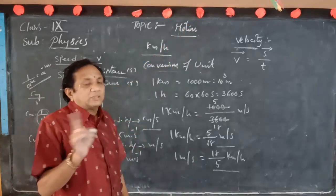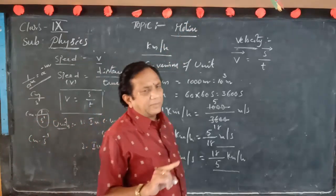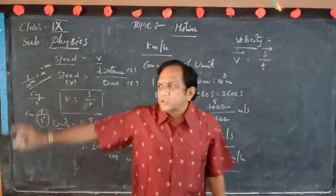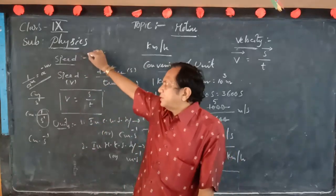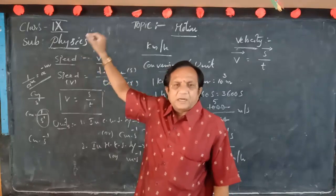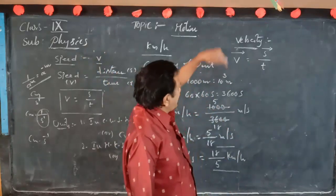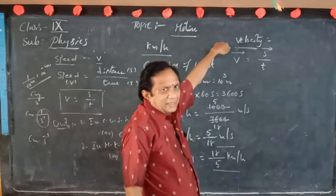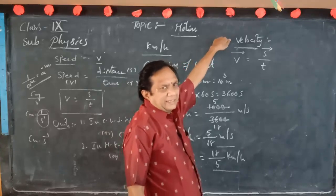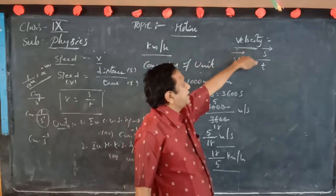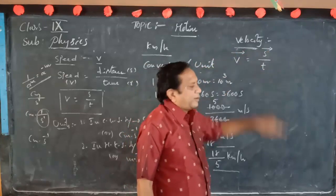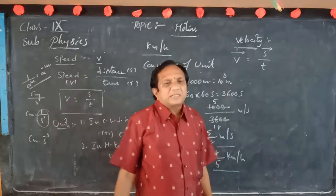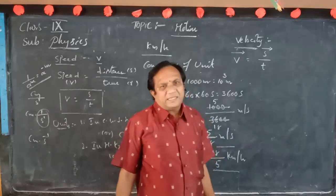Both speed and velocity are measured in the same manner, but there is a small difference in physics. Commonly, people use the word speed, but when direction is specified, we call it velocity. Velocity is displacement by time, and the arrow indicates the vector quantity. That is why velocity is a vector quantity.